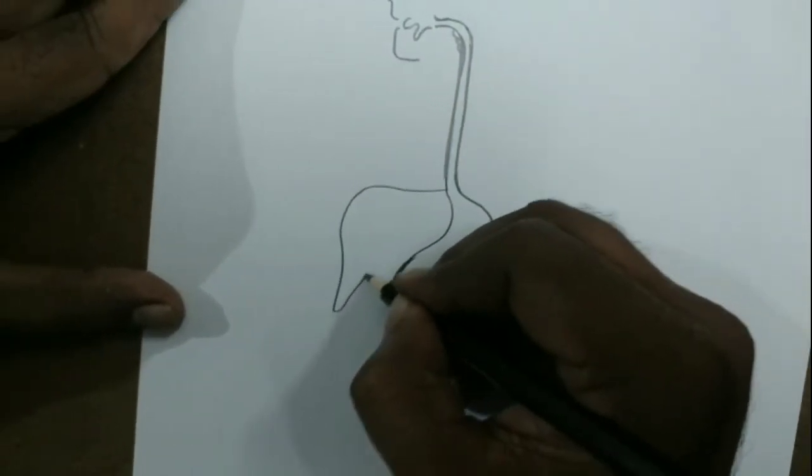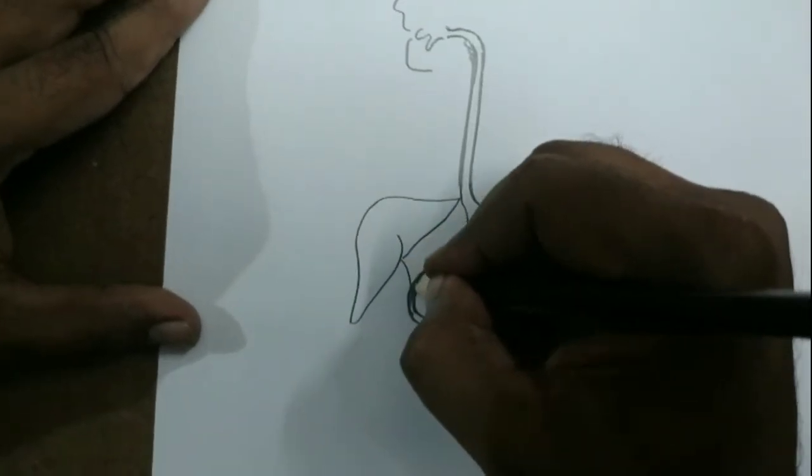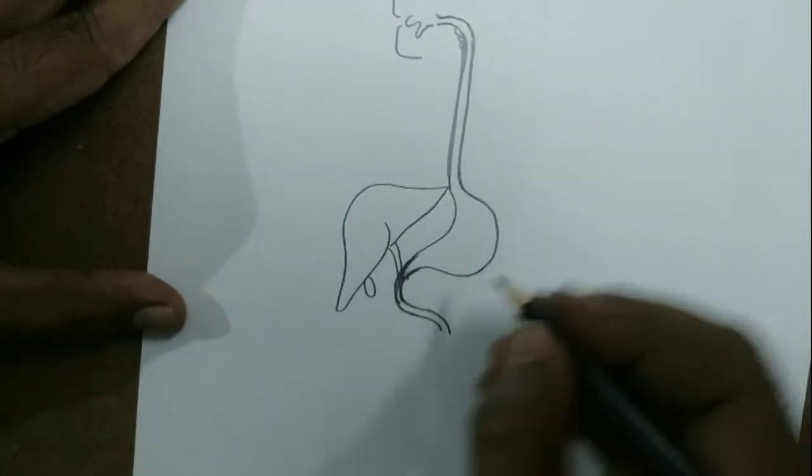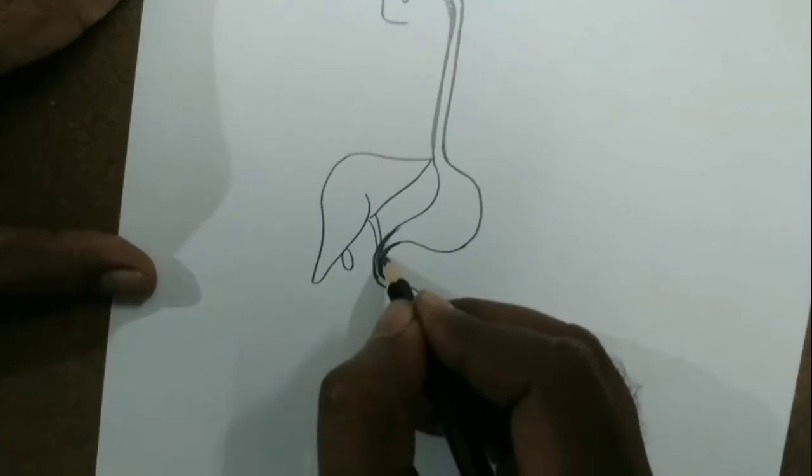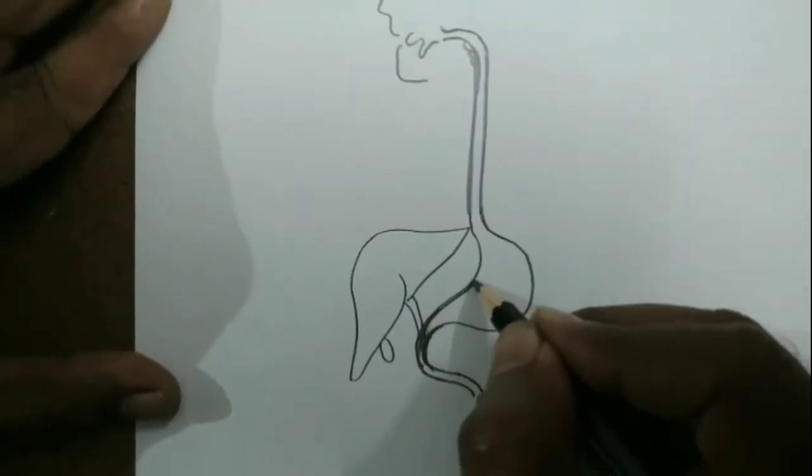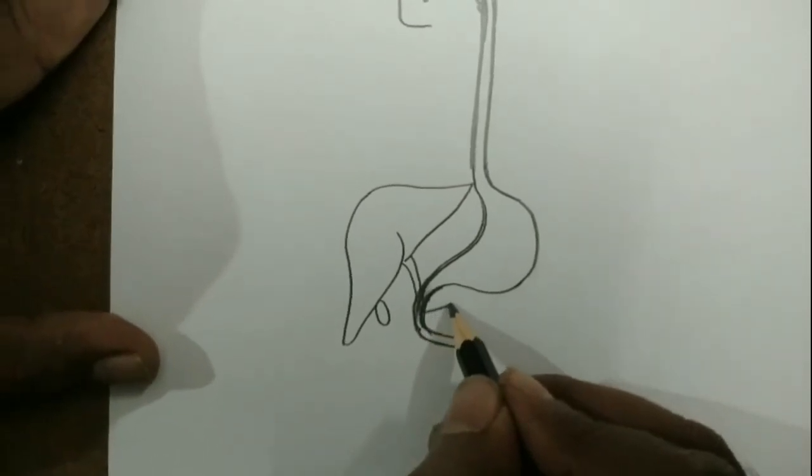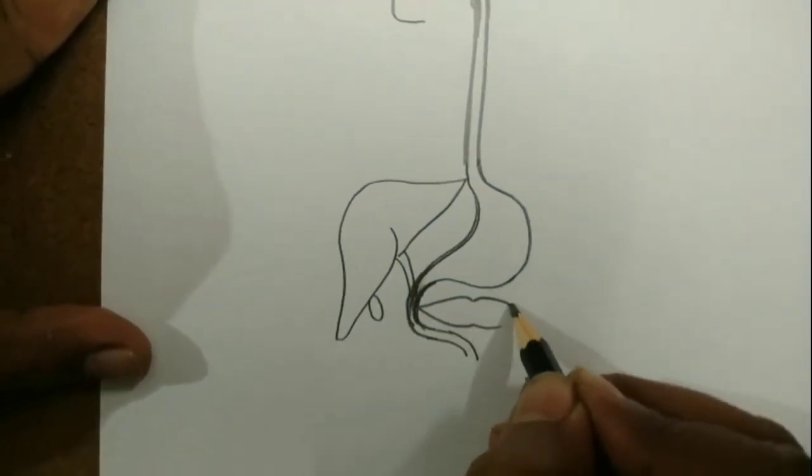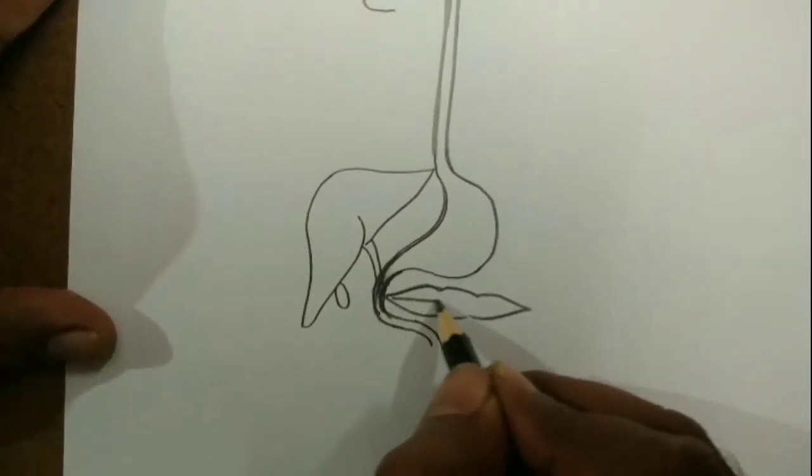Draw the liver like this. Now next, you have to connect this liver into the duodenum, and this is the gallbladder. Now the pancreas, you have to draw like this.